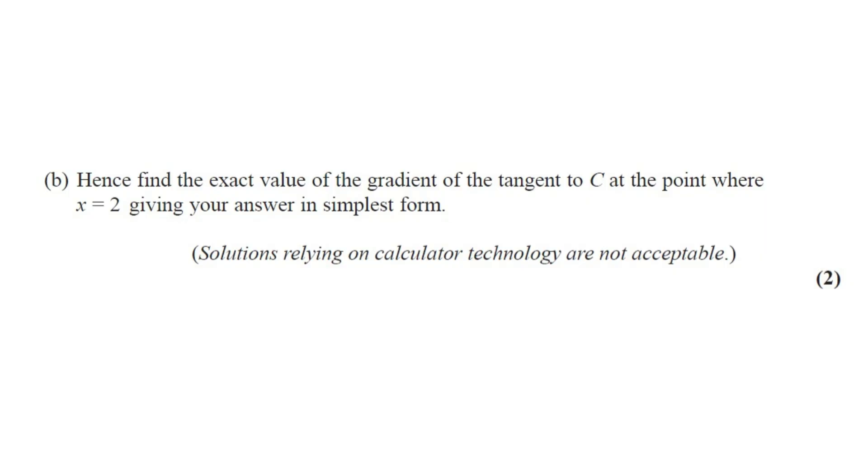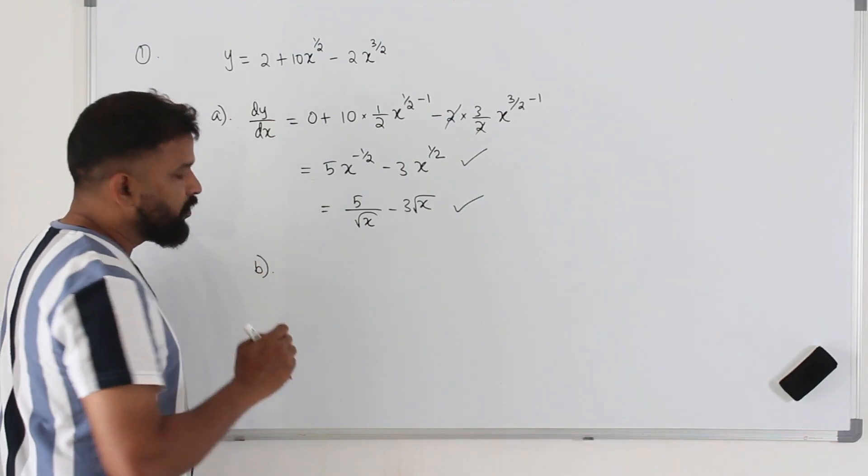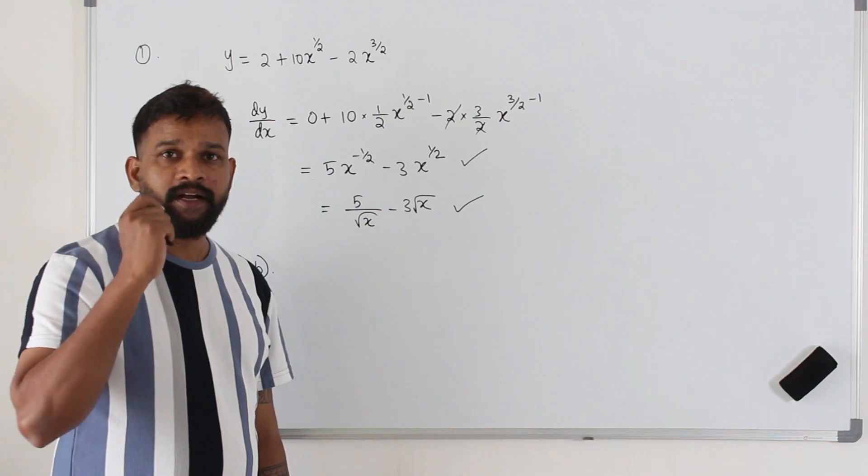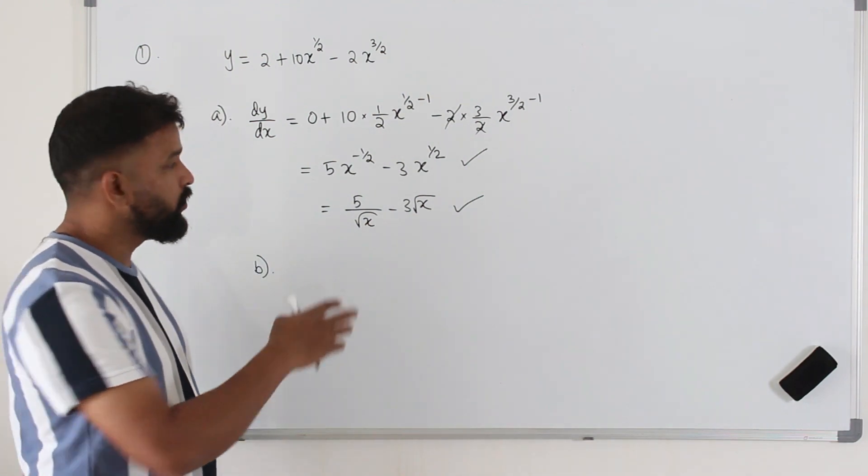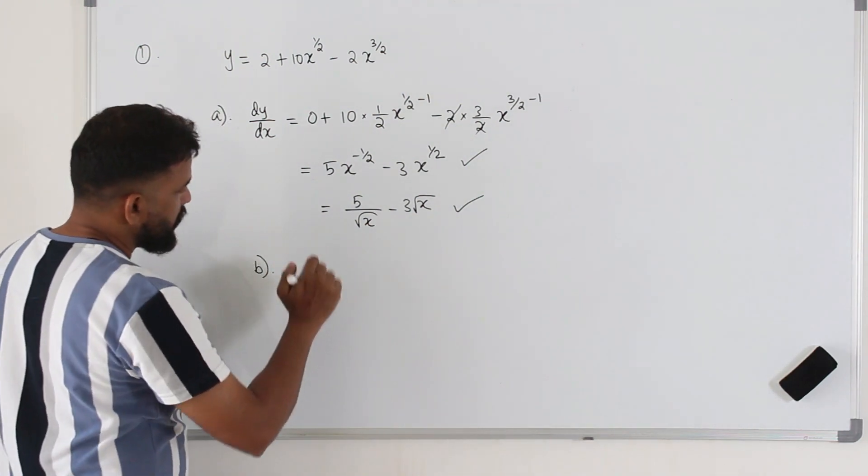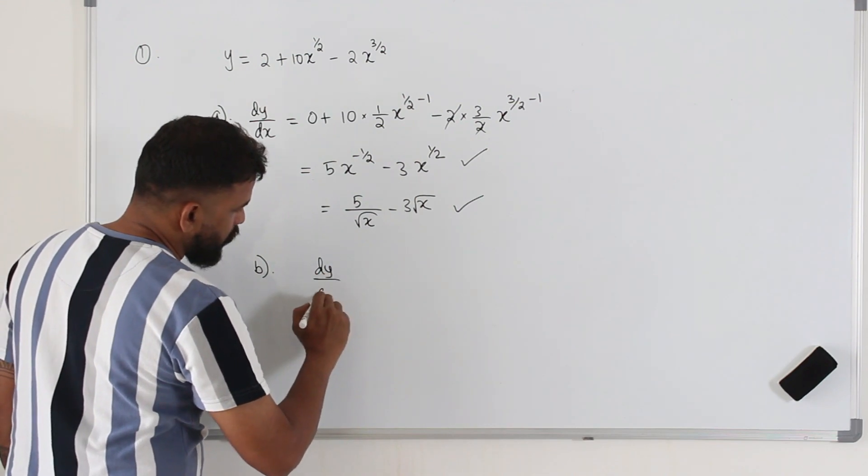Part B, hence find the exact value of the gradient of the tangent to C at the point where x is equal to 2. Give your answer in simplest form. This question got 2 marks. In part B, we need to find the gradient of tangent at x equals 2. So we are going to use the gradient function and replace x equals 2.